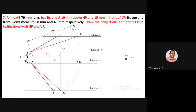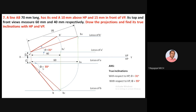Using a protractor, measure the inclination. The true inclination with respect to HP, theta, is equal to 31 degrees, and with respect to VP, phi, is equal to 55 degrees. Write down the final answers: true inclination with respect to HP theta = 31°, true inclination with respect to VP phi = 55°.